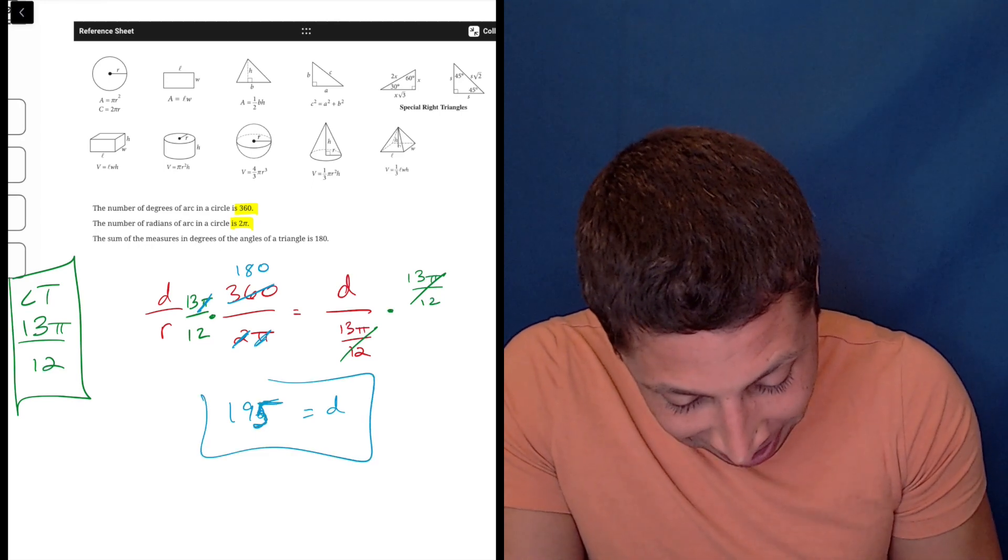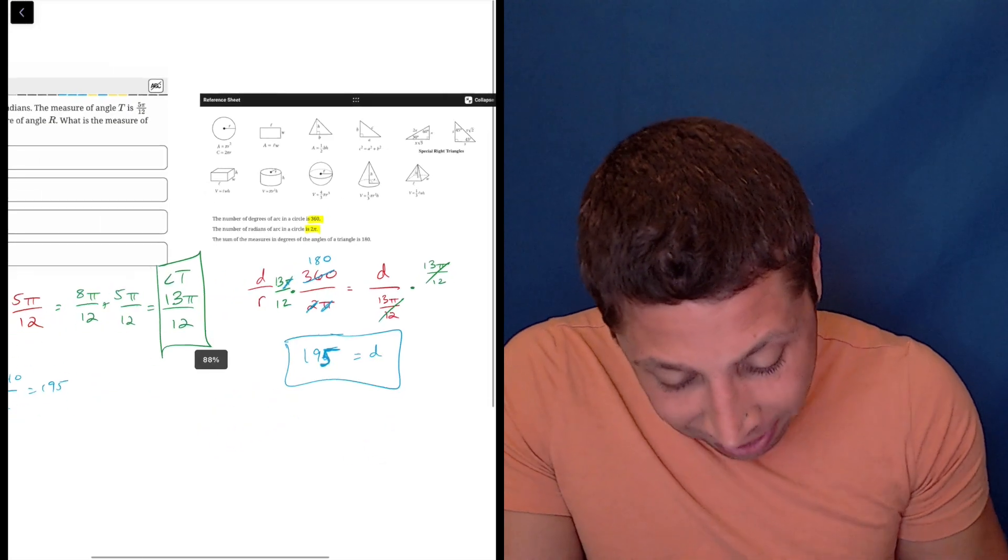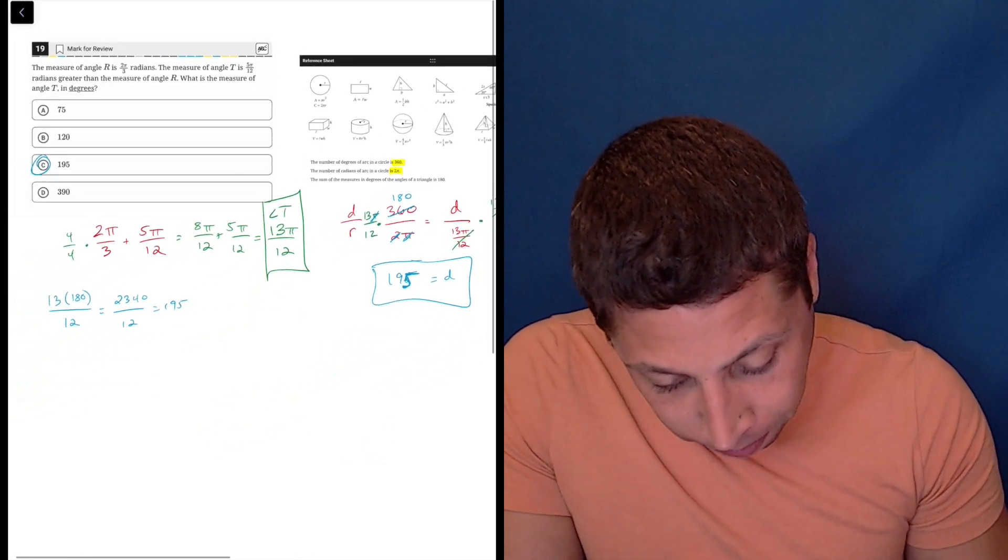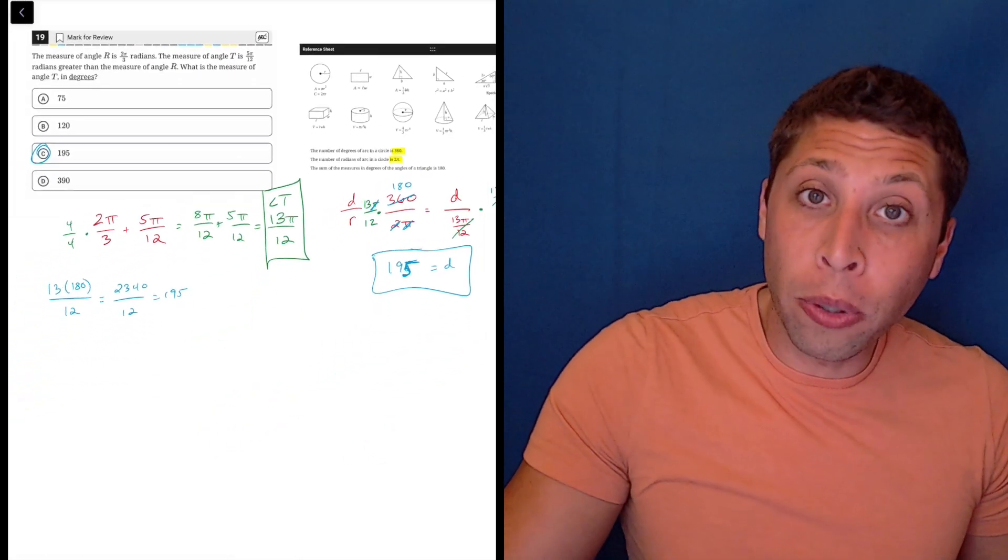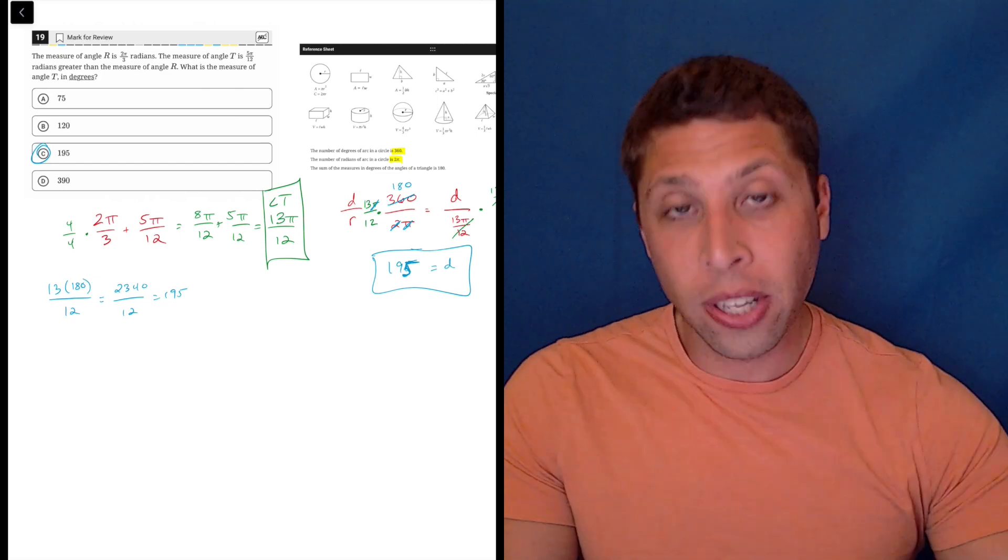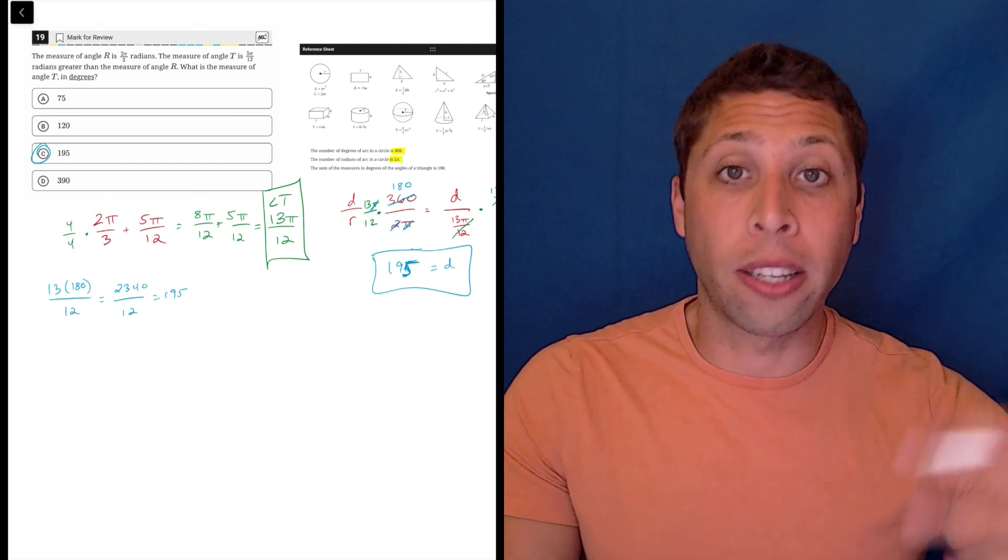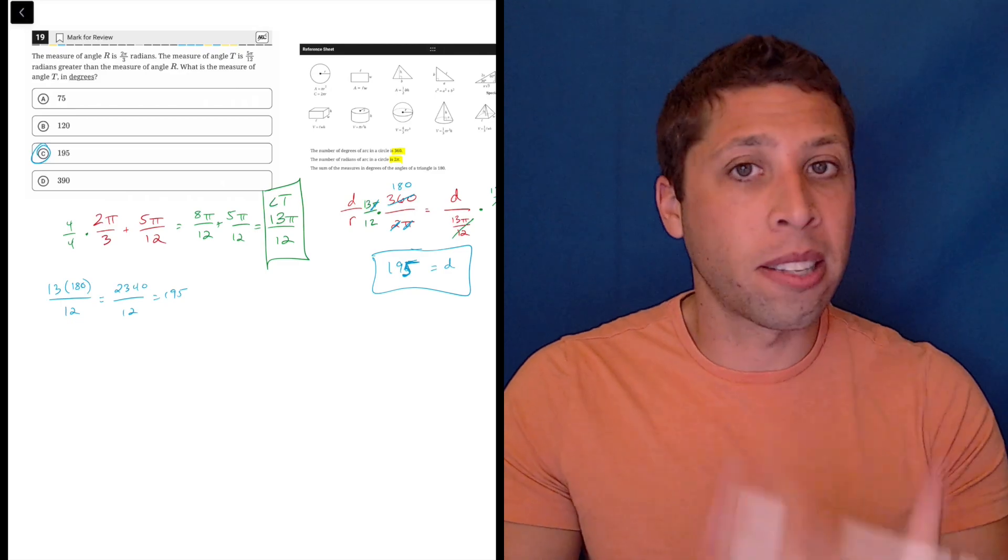Let's make sure that looks like a five, 195. So that's your answer. Radians are annoying because they seem way more complicated than they are. I would just say, remember that they give you that conversion in the reference chart. So it's not something you need to memorize.